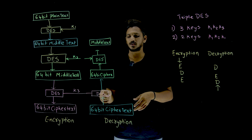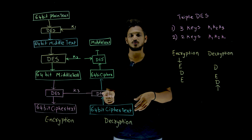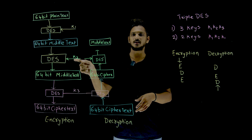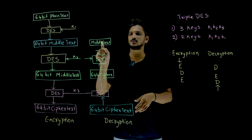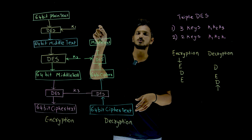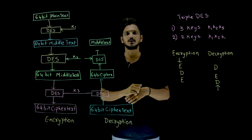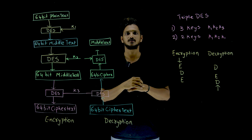During decryption, the cipher text is sent into DES where decryption is done, producing a 64-bit intermediate value. Then DES is applied again using K2, producing another middle text, and so on, until you get back the original plain text.